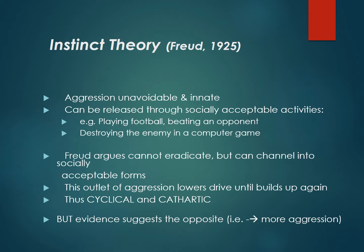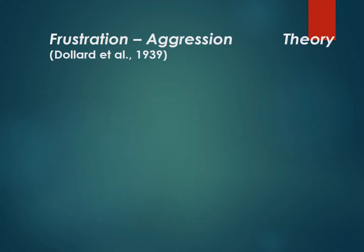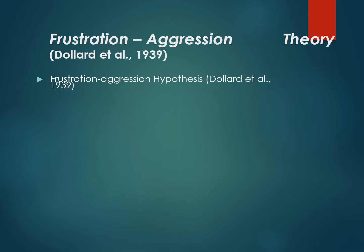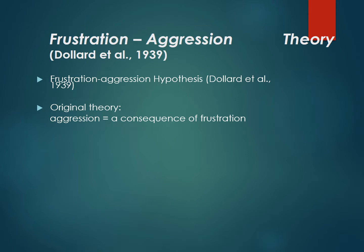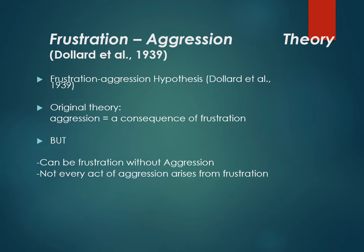However, the evidence doesn't seem to support Freud's theory. It suggests instead that when children get involved in aggressive behavior in sport, they're actually more likely to be aggressive the rest of the time. Dollard and colleagues then came up with the frustration-aggression hypothesis — the basic idea being that aggression happens when we get frustrated, which makes sense. However, we also know that sometimes we can get frustrated and not be aggressive, and some acts of aggression don't arise from frustration at all — a lot of instrumental aggression has nothing to do with frustration. So on its own, this theory didn't work too well.